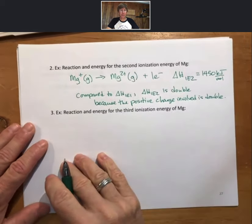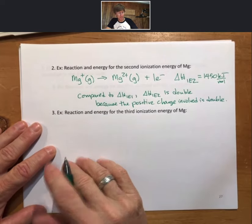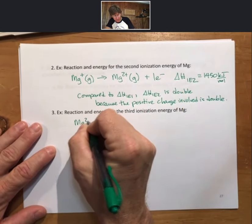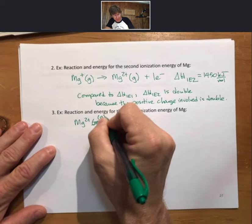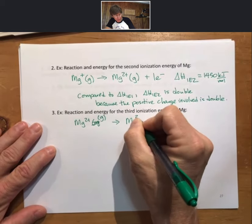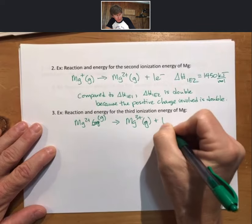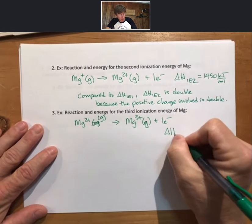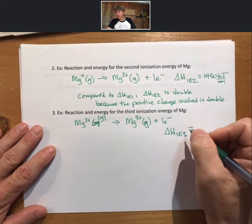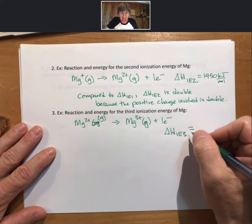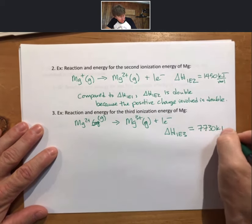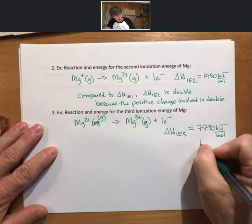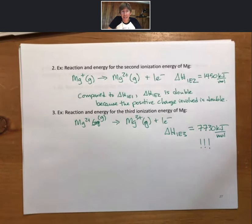All right, ready for ionization energy for reaction number three. Start with Mg2 plus. Remove that third electron. This time we get delta H IE3 equal to 7,730. All right. That is a lot bigger than we might expect.